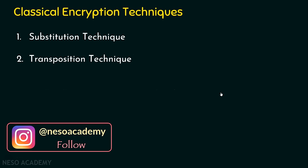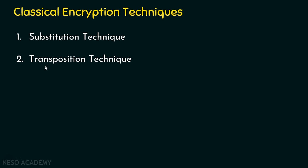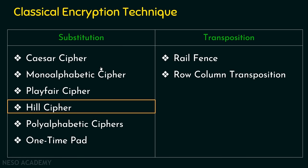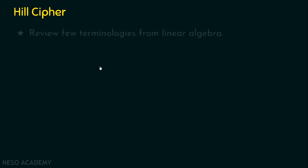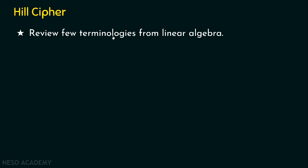Classical encryption techniques are of two types: the substitution technique and the transposition technique. We are now in the substitution technique, focusing on Hill Cipher — specifically, the decryption of Hill Cipher. To understand this process, we are going to review a few terminologies from linear algebra.